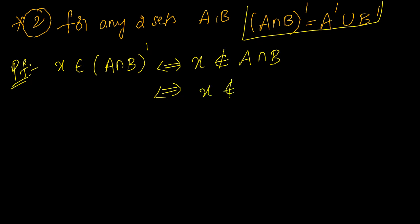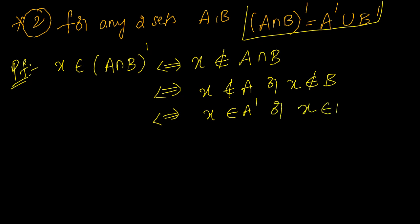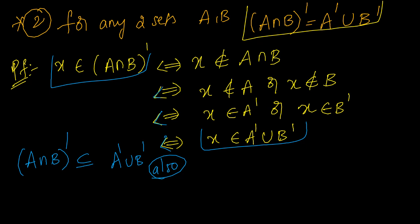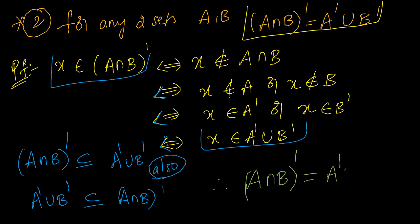So x does not belong to A or x does not belong to B. X not in A means x is in A complement, and x not in B means x is in B complement. Therefore x belongs to A complement union B complement. Using if-and-only-if statements, (A intersection B) complement is a subset of A complement union B complement and vice versa. Hence (A intersection B) complement = A complement union B complement.